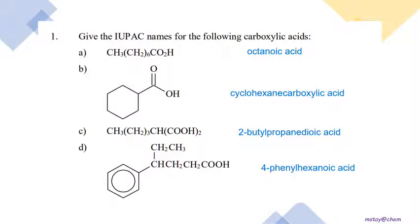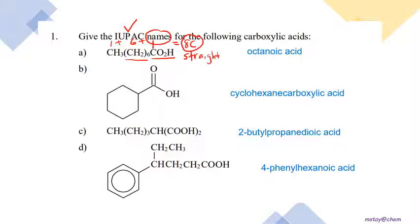Now that we can draw structures, we need to give IUPAC names. For question 1a, we see CO₂H (the carboxyl group) as carbon one, followed by six CH₂ units and a terminal CH₃ — eight carbons total, in a straight chain. Since we have eight carbons, the parent is octane; we remove the -e and add -oic acid, giving octanoic acid.